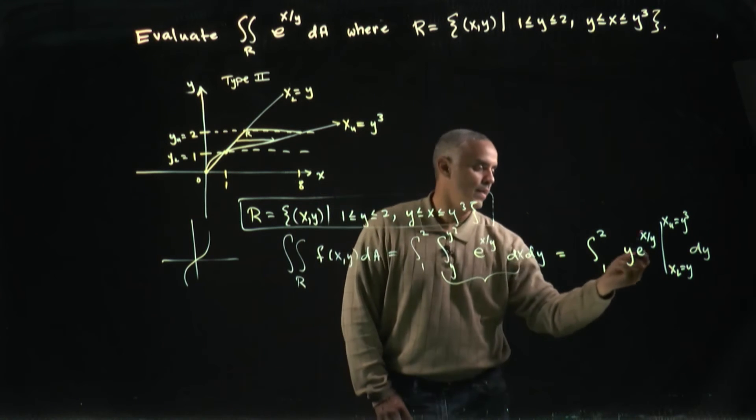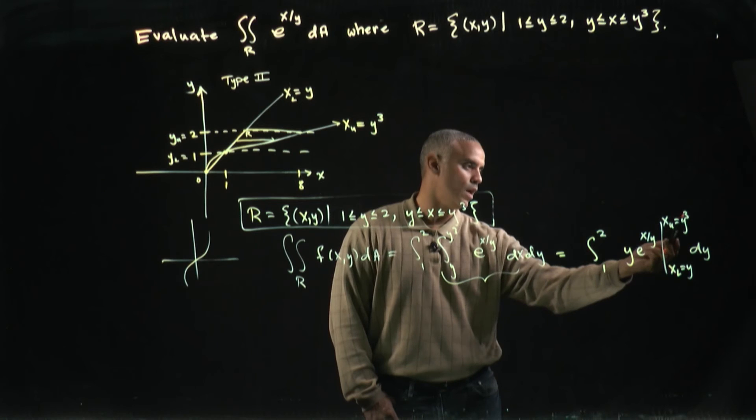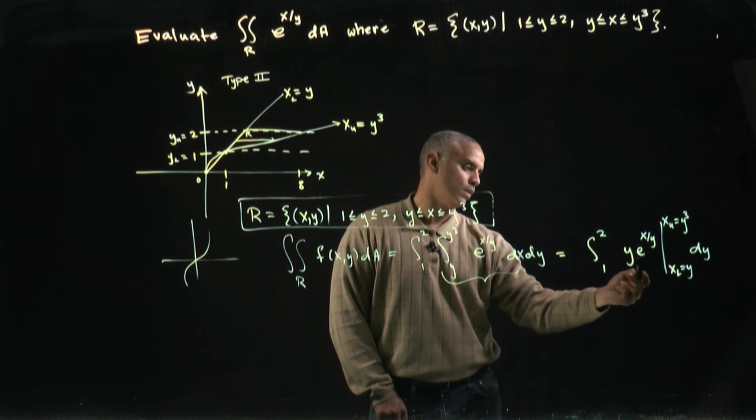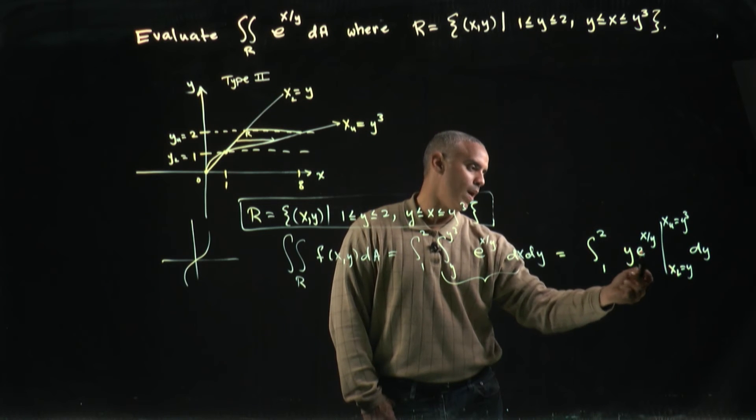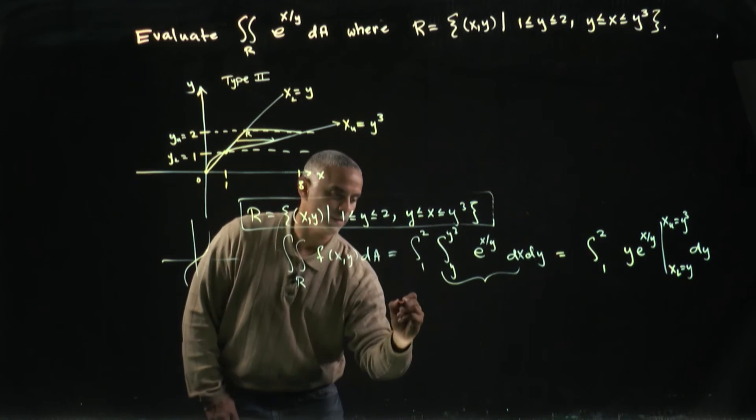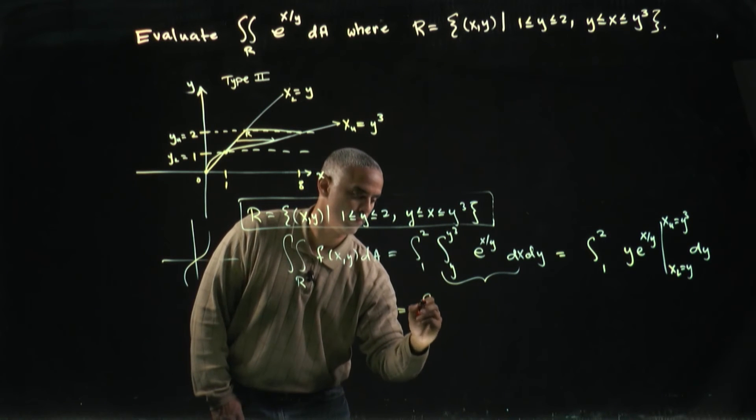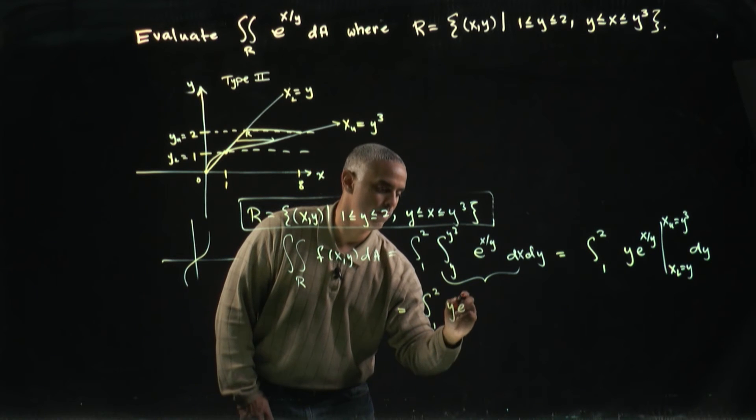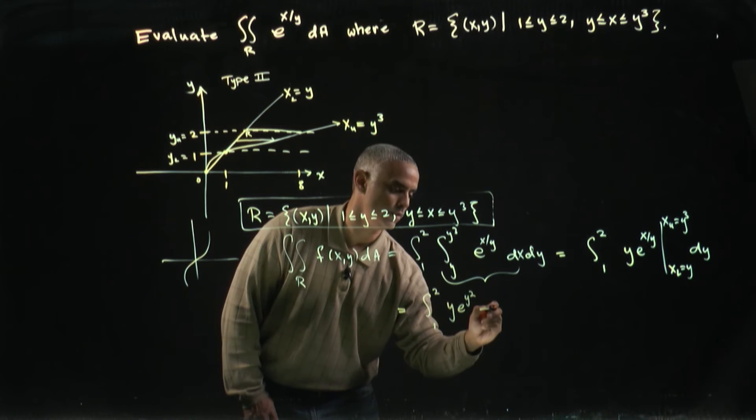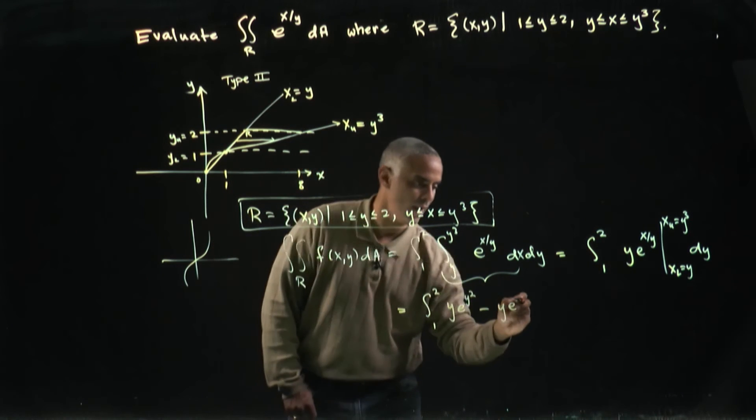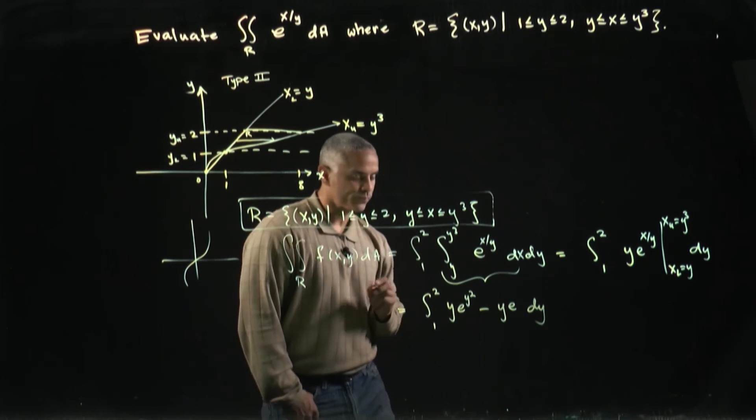And if I use the evaluation theorem, we can see at the upper limit, I'll get y cubed over y, it's going to be y e to the y squared, and at the lower limit, I'll just get a y e, because y over y will just be one. So, I can now write this as the integral from one to two of y e to the y squared minus y e dy.